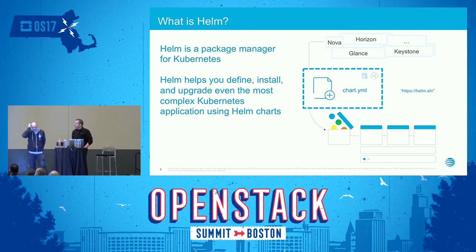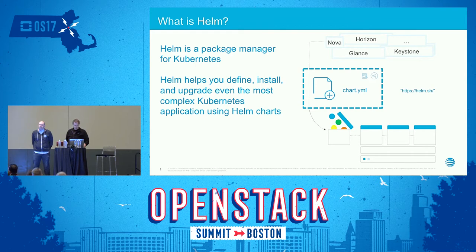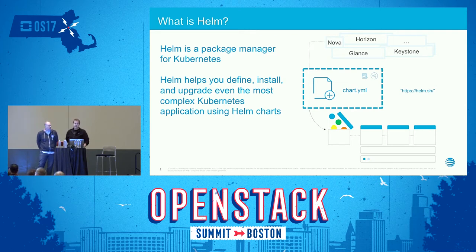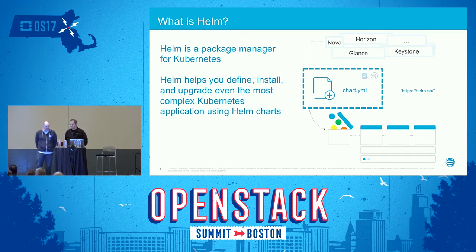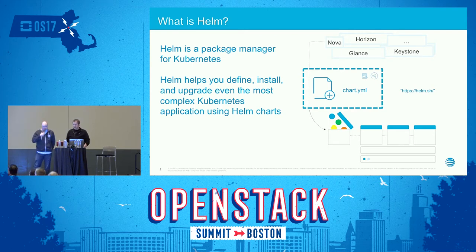Before we start talking about OpenStack Helm, it's important to briefly touch on what Helm is. Simply put, Helm is a package manager for Kubernetes — it helps you define and install even the most complex Kubernetes applications using Helm charts. A single chart might be used to deploy something simple like Memcache or Apache.